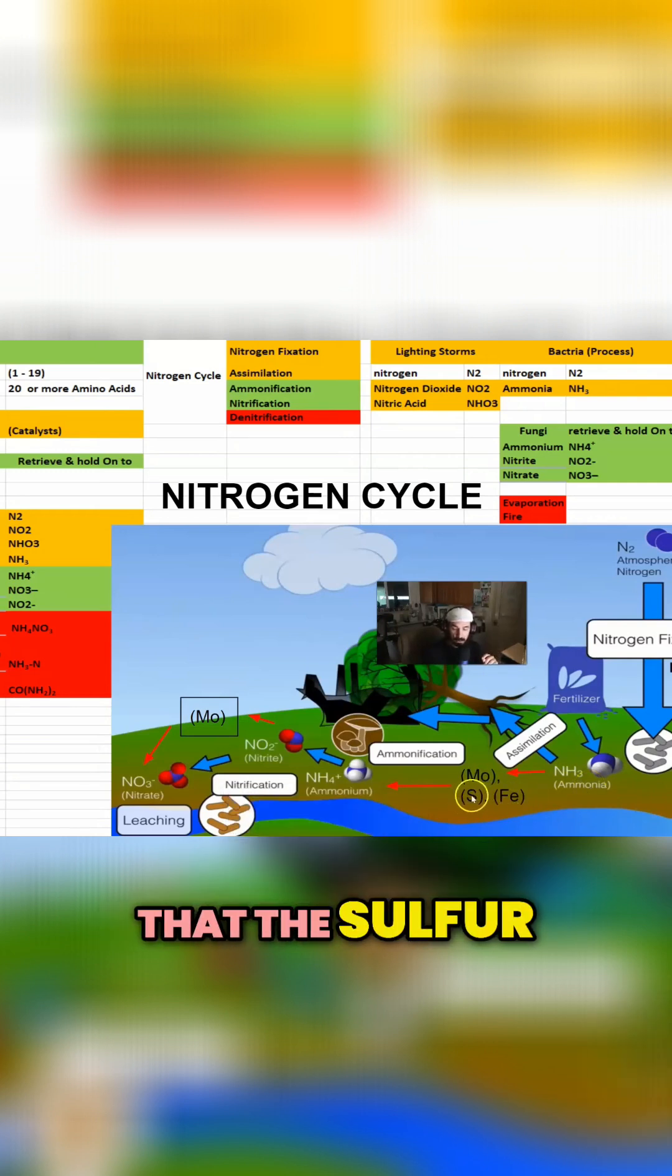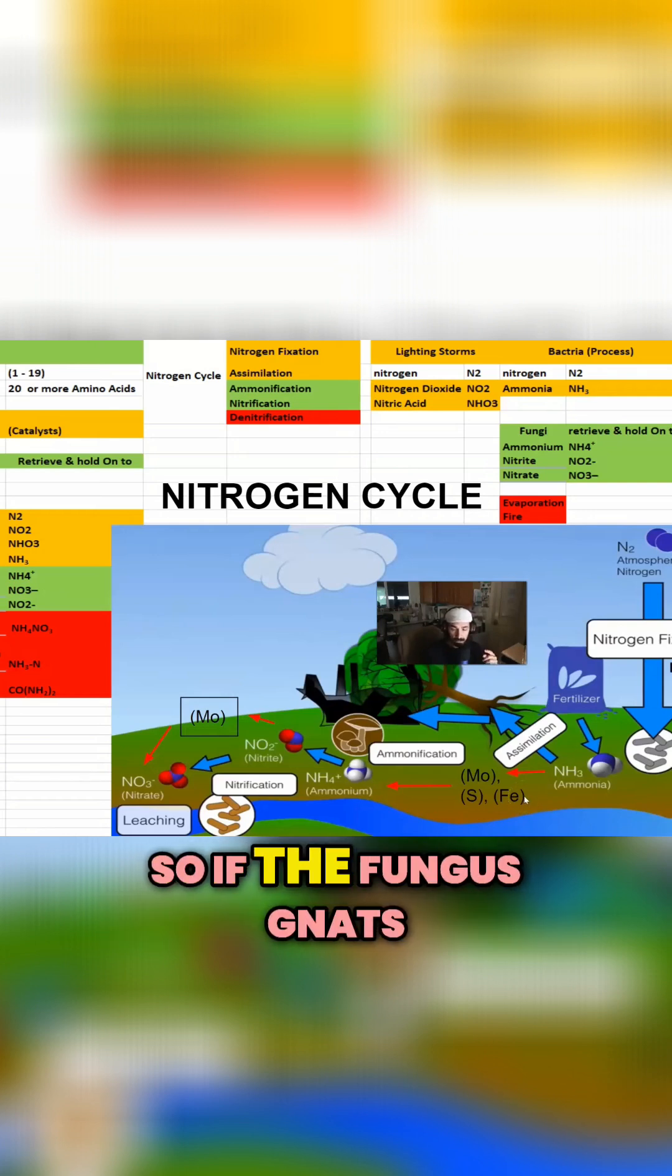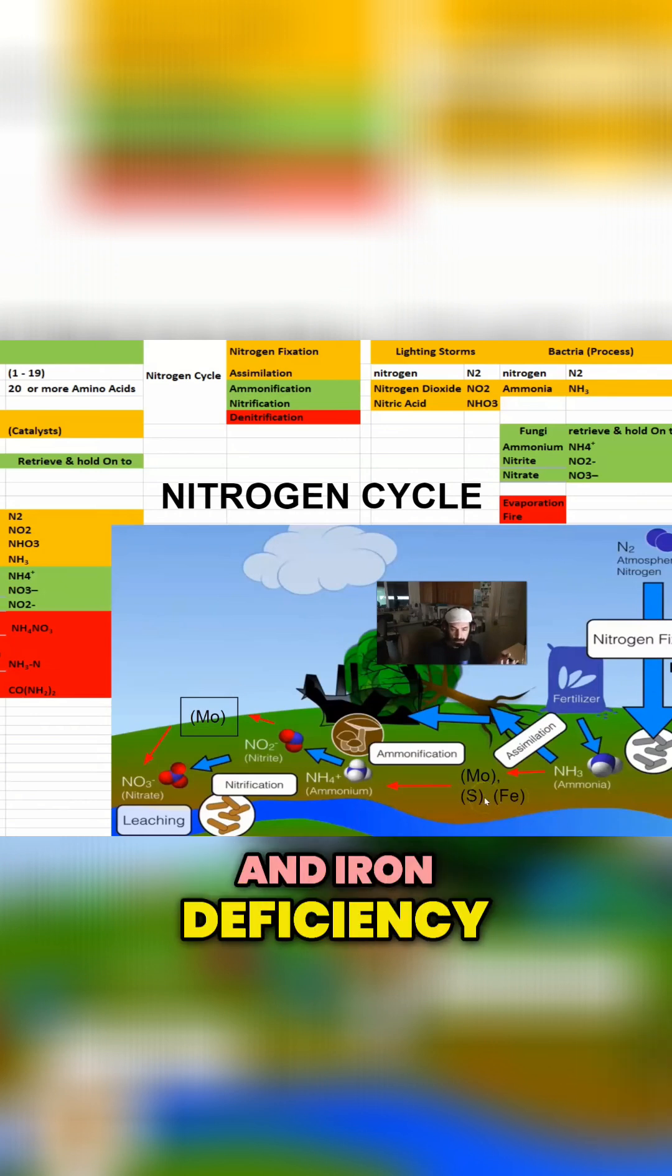What's interesting, though, is that the sulfur and the iron are the fungi's responsibilities. So if the fungus gnats are eating the fungi, the deficiency is going to show up as a sulfur and iron deficiency.